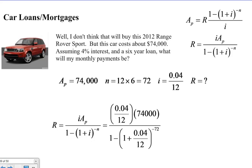When you do this, you get $1,157.74 per month. So that's what our car payments would be on a $74,000 Range Rover Sport.